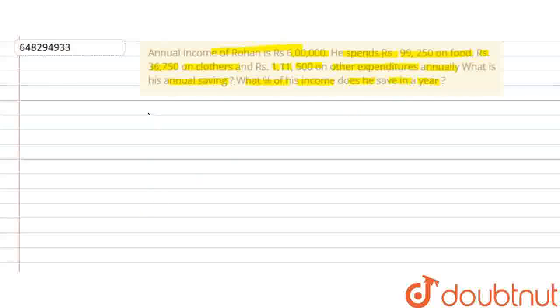So, first of all, annual income of Rohan is given as Rs. 6,00,000. Now, to find his savings, we will subtract the total expenditure from his total income.